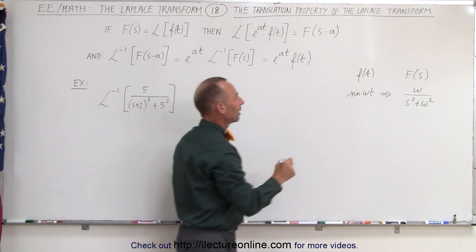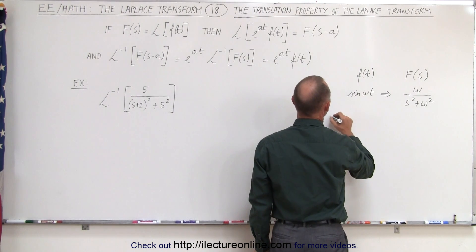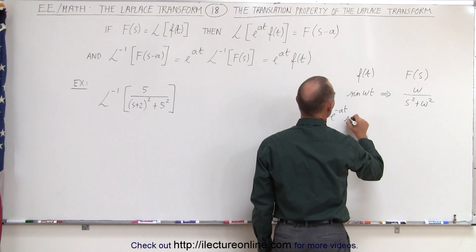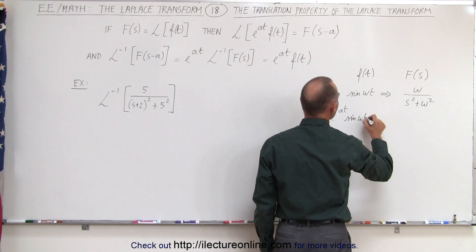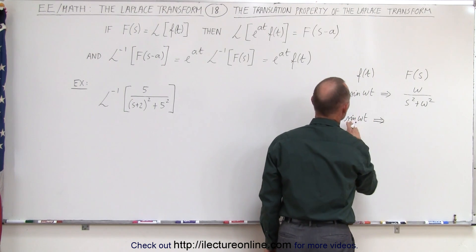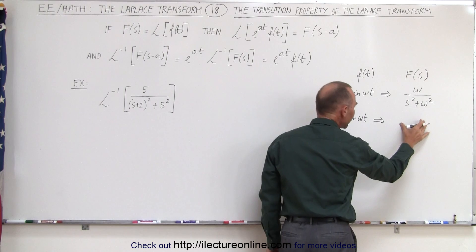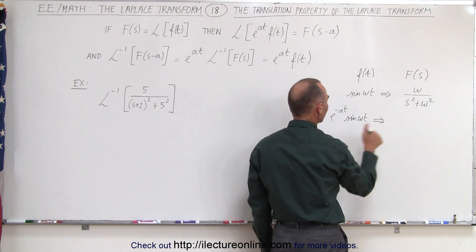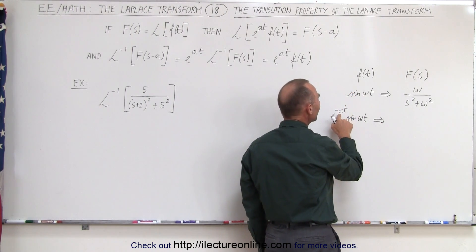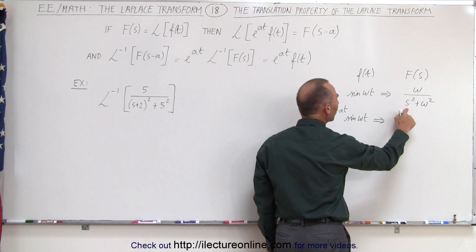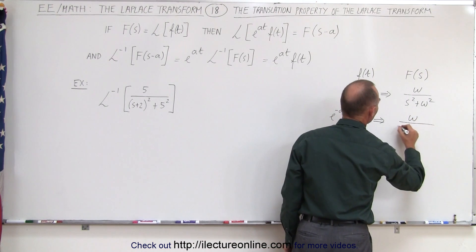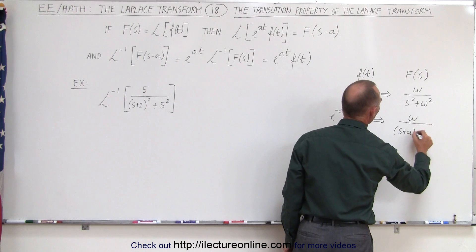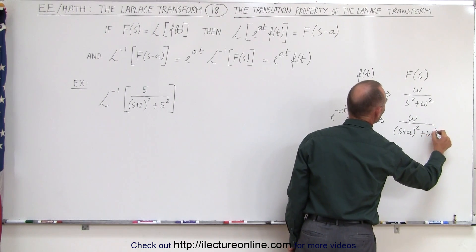In other words, if we have something that looks like this, e to the minus at times the sine of omega t, what that does is if I transfer that into the frequency domain using the Laplace transform, e to the minus at simply means that I'm going to take s plus a. So this becomes omega divided by s plus a quantity squared plus omega squared.